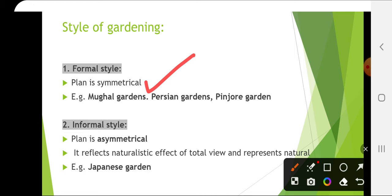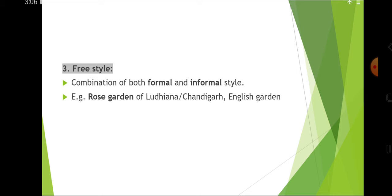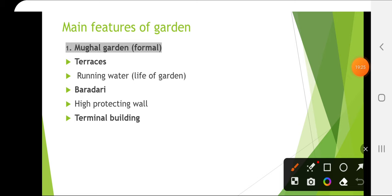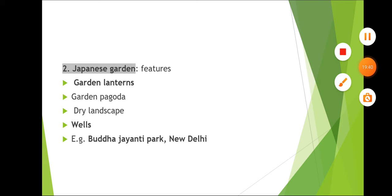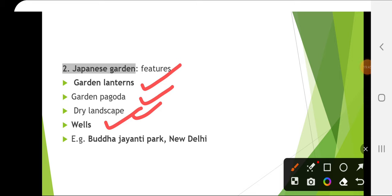Informal style is where the plan is asymmetrical, reflecting a naturalistic effect. Example is Japanese Garden. Freestyle is a combination of both formal and informal style — Rose Garden of Ludhiana, Chandigarh and English Gardens are freestyle. Features of Mughal Gardens: terraces, running water (life of garden), Baradari (a 12-walled structure), high protecting wall and a terminal building. Japanese Garden features include garden lanterns, pagoda, dry landscape and wells. Example: Buddha Jayanti Park in New Delhi.